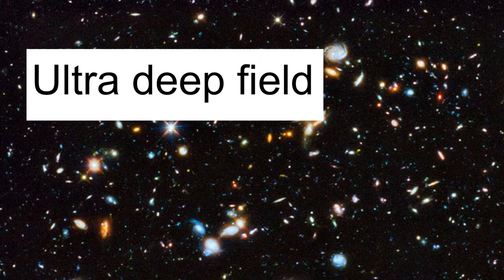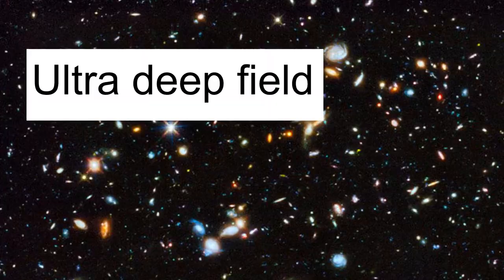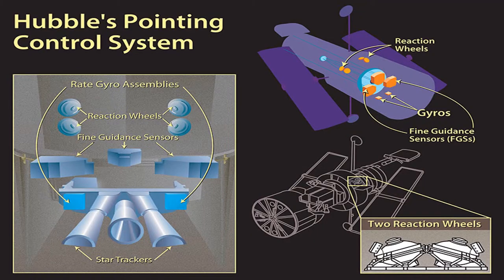In order for Hubble to take this picture, it had to remain incredibly still. So how did it do it? Well, Hubble has a control system. That control system has two gyros, a fine guidance sensor, and four reaction wheels.